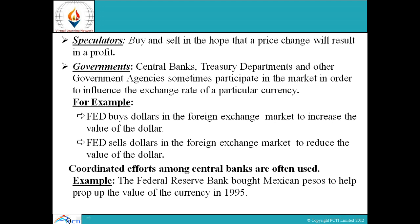Governments, central banks, treasury departments, and other government agencies sometimes participate in the market in order to influence the exchange rate of a particular currency. For example, the FED buys dollars in the foreign exchange market to increase the value of the dollar, and sells dollars to reduce the value of the dollar. Coordinated efforts among central banks are often used — for example, the Federal Reserve Bank bought Mexican pesos to help prop up the value of the currency in 1995.